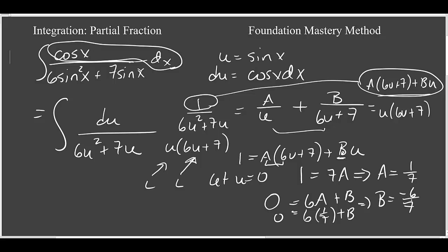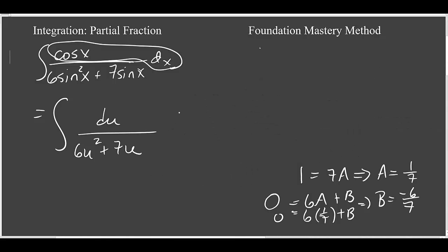So now we're ready to integrate. Now our integral becomes the integral of a over u, so 1-seventh over u, plus b, which is negative 6-sevenths, over 6u plus 7.